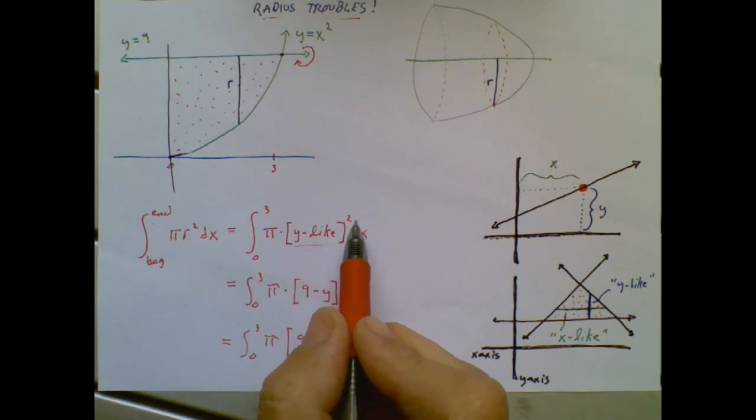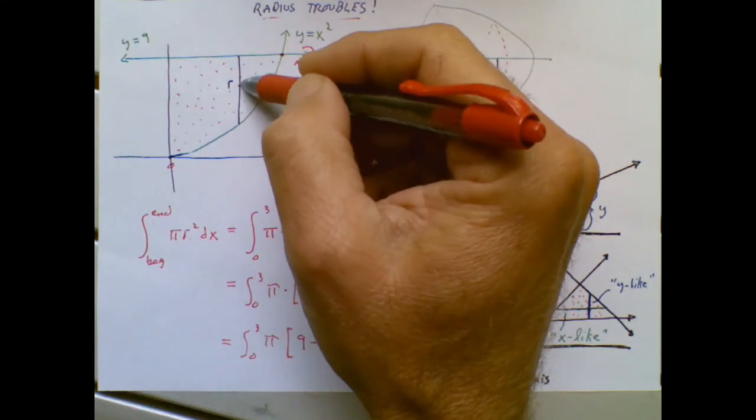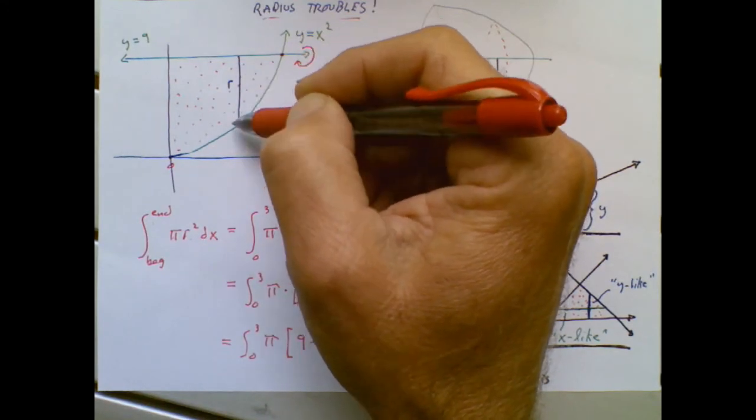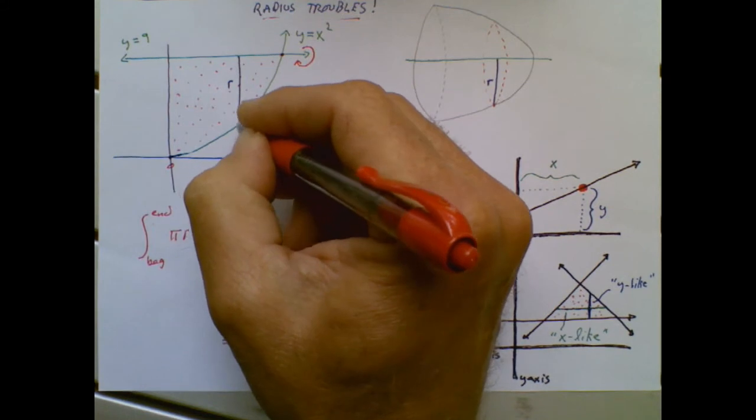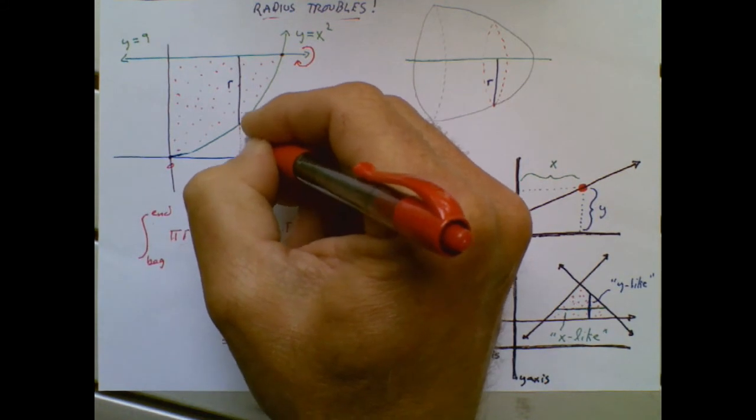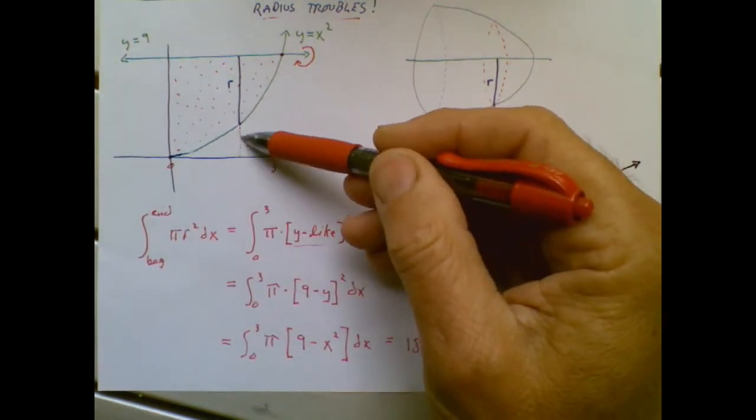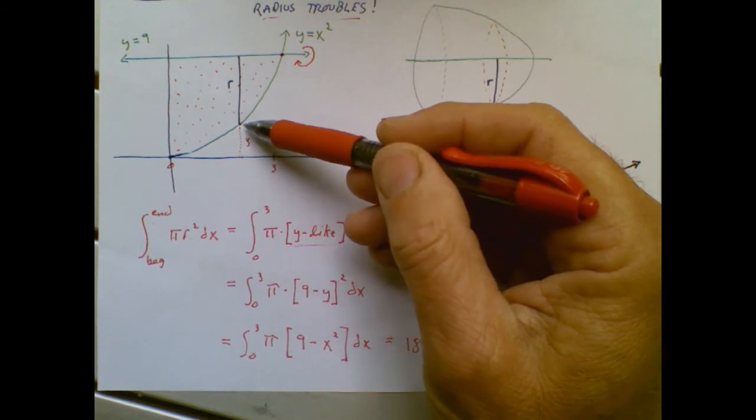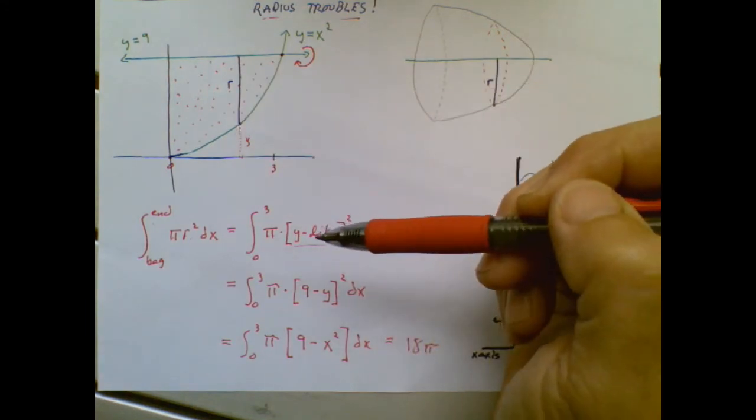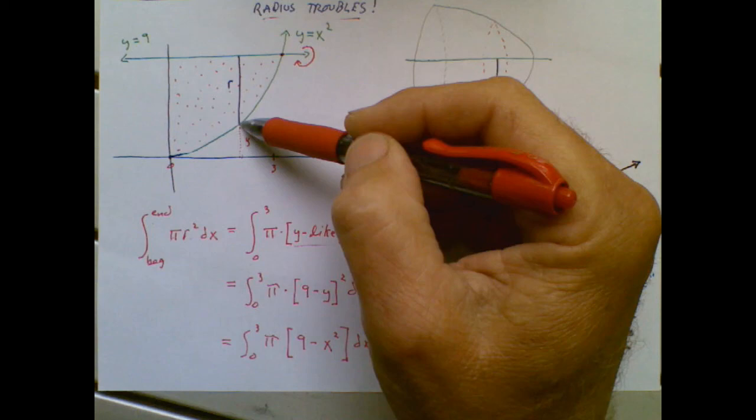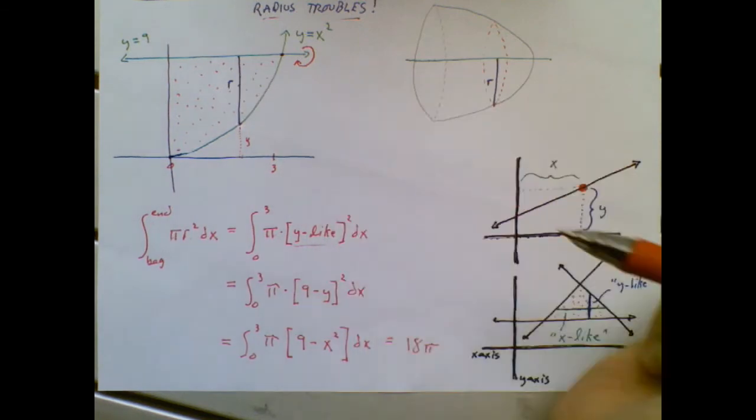In the previous problems, we said if the radius is going up and down, that's a y-value. But be super, super careful here. Technically, according to your algebra 1 teacher, this is a y-value, a distance from the x-axis up to the function. This r is going up and down, but it doesn't meet the definition of a y-value from algebra 1 because it goes from one function to another function. So I call this r a y-like value.